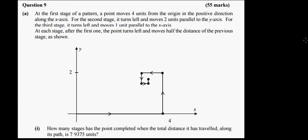We're going to look at this particular pattern. Starting from the origin, we move out 4 units, then turn left and move up 2 units, turn left again and move 1 unit, turn left, down half a unit, turn left, a quarter, then 1 eighth and so on. At each point we turn left and move half the previous distance. So the distances are: 4, 2, 1, half, quarter, 1 eighth and so on.